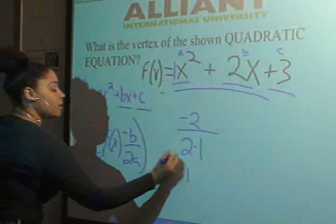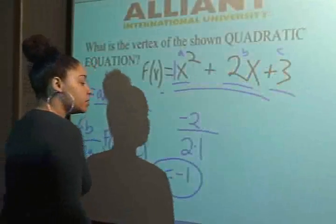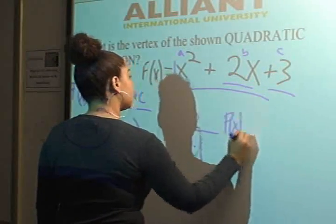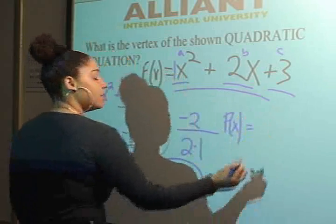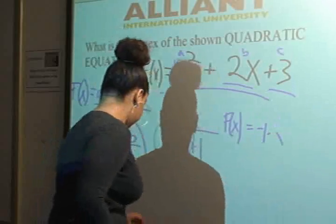Now we can plug in -1 for all the x's. So that leaves us with f(x) equals... wait, (-1)².